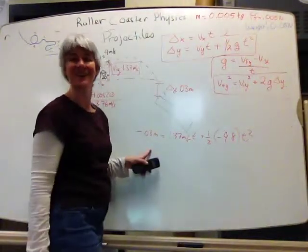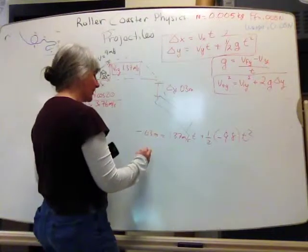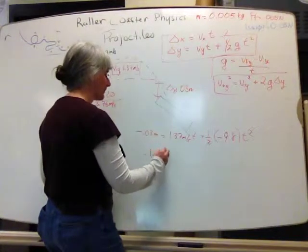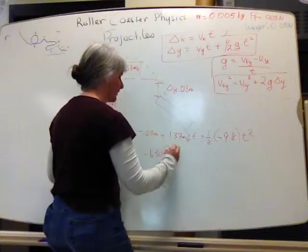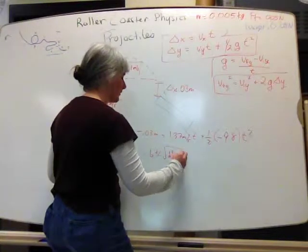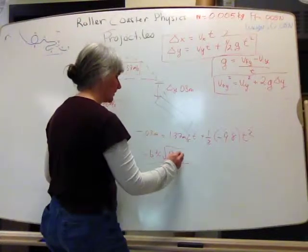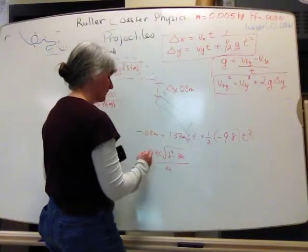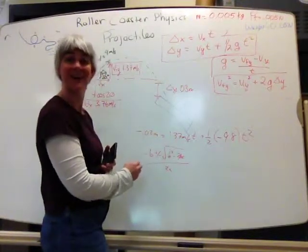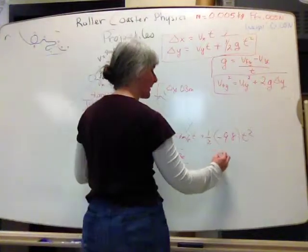This is an ugly quadratic equation problem. Remember that negative b plus or minus the square root of b squared minus 4ac over 2a. Yeah, you've got to do that. Have fun. Once you find the time,